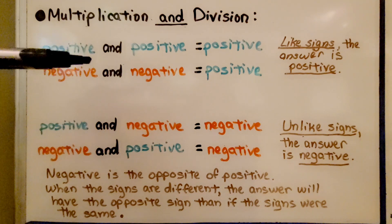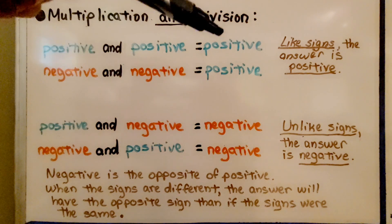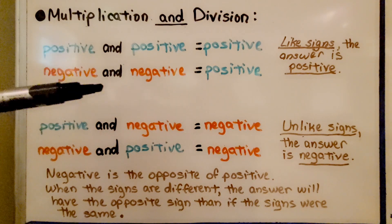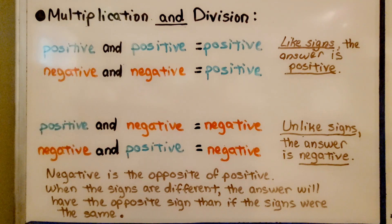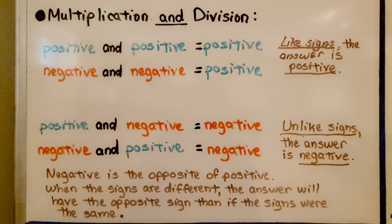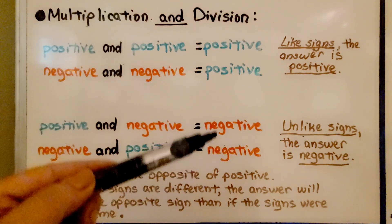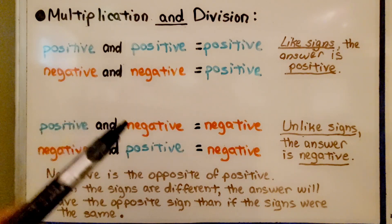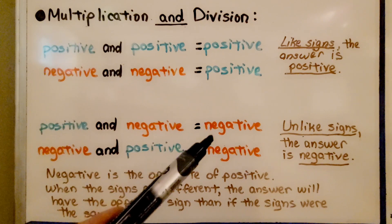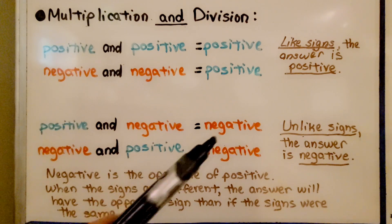So when they have like signs, the answer's positive. When they have unlike signs, the answer is negative. Negative is the opposite of positive. When the signs are different, the answer will have the opposite sign — our answer, whether it's a product or a quotient, will be negative.